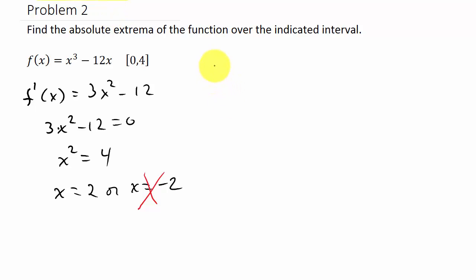Alright, so we have f(2) is equal to 2³ - 12 times 2, and that is going to give us—let's see, that's 8 - 24. That is negative 16. Okay, so that takes care of the critical numbers.